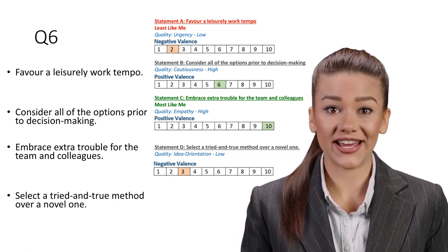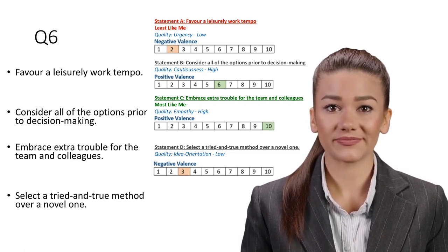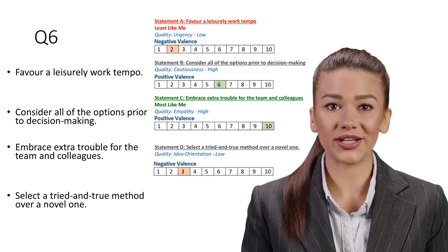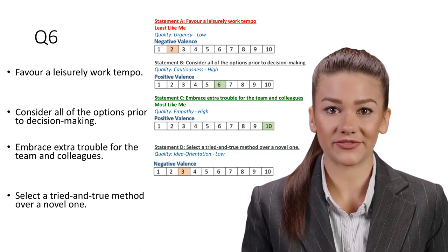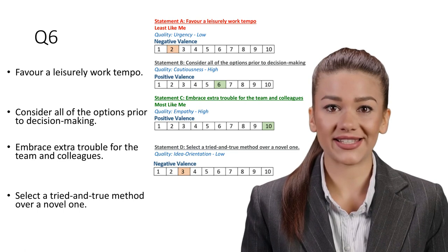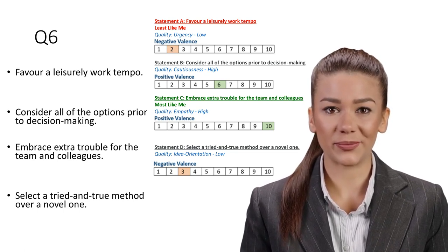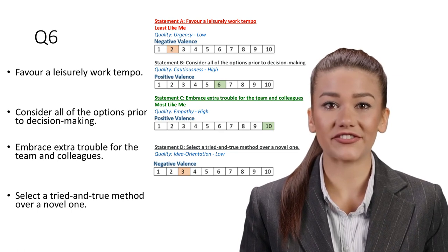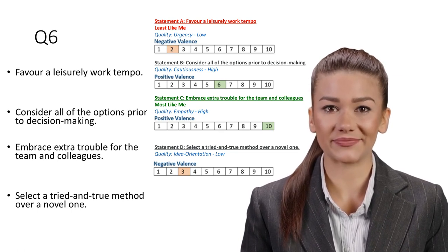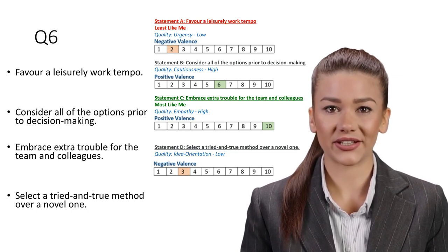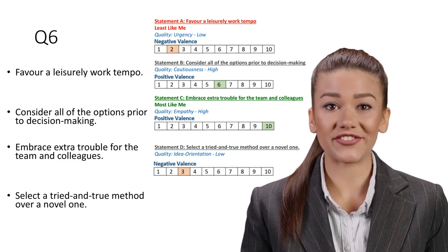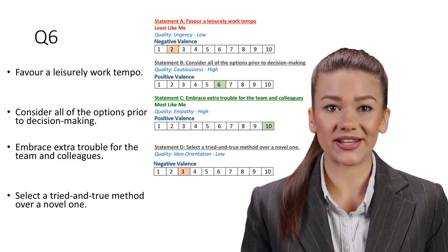Statement D: Select a tried and true method over a novel one. Quality: Idea orientation, Low. Fostering innovation in the workplace assists businesses to remain on top of the market. Sticking with the familiar may not achieve the creativity and innovation needed in a modern business. Being idea-oriented, this statement is also a highly valued trait which will be allocated points in other questions.